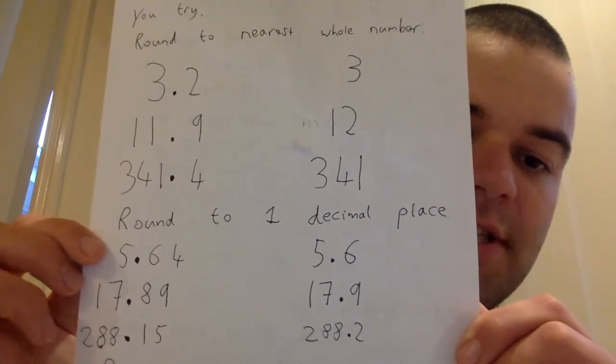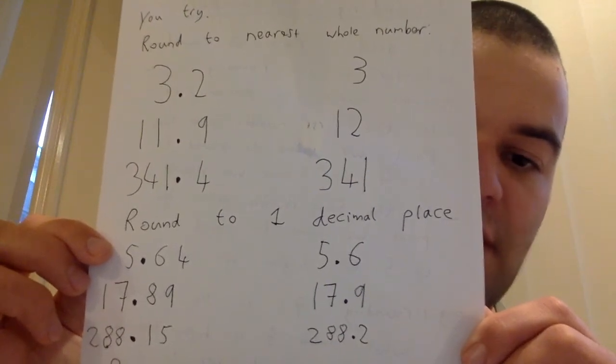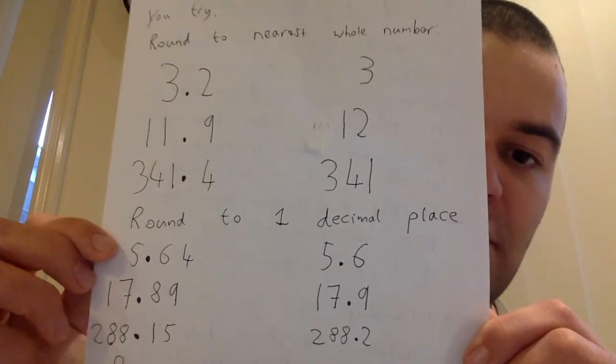And then the one at the bottom, 288.15. The 5 means we round up, so it rounds up to 288.2.